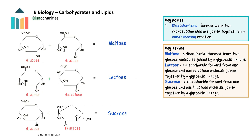Disaccharides are formed when two monosaccharides join together. Here are some examples: maltose is formed from two glucose molecules, lactose is made from glucose and galactose, and sucrose is made from glucose and fructose. Note that although fructose forms a pentagon shape in its ring form, it is actually a hexose sugar.